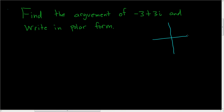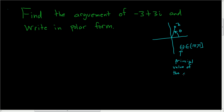Suppose that we have a complex number z. There's an angle here which we can denote by theta. By the picture you can see that theta is in the interval negative pi to pi. This value of theta is called the principal value of the argument, and this is called the principal branch.